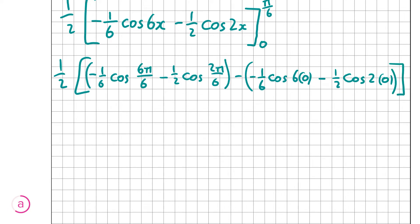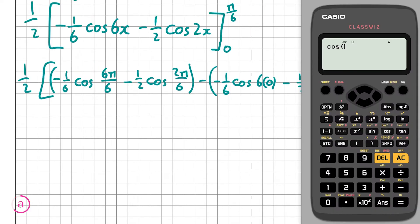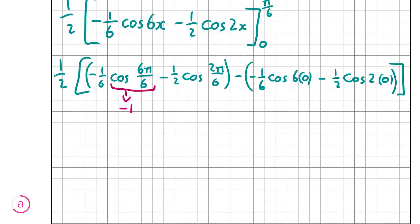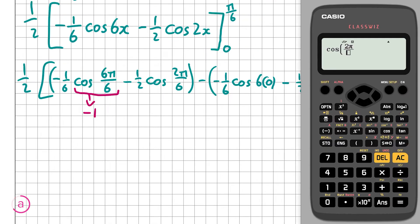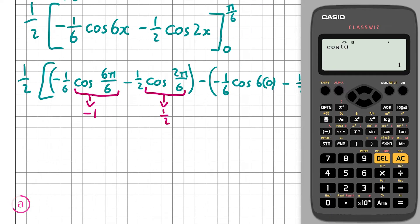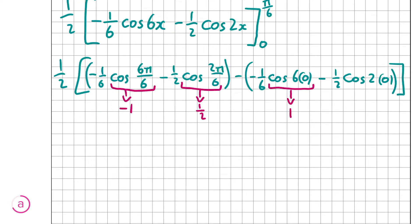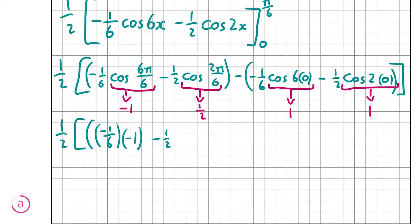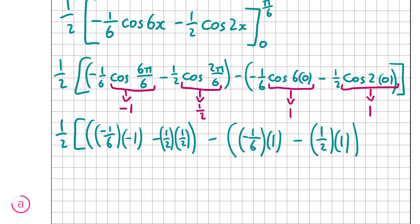So now I need to find the cosine values. Cos(6π/6) equals minus 1. Cos(2π/6) equals a half. Cos(6 · 0) is just cos 0, which is 1. And cos(2 · 0) is also cos 0, which equals 1. So I rewrite this as half times: minus 1 over 6 times minus 1, minus a half times a half, all minus the bracket minus 1 over 6 times 1, minus a half times 1.